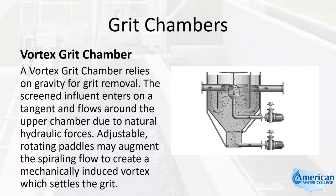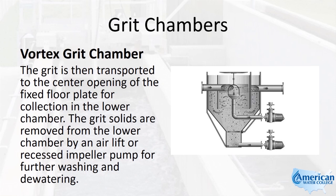A vortex grit chamber relies on gravity for grit removal. The screened influent enters on a tangent and flows around the upper chamber due to natural hydraulic forces. Adjustable rotating paddles may augment the spiraling flow to create a mechanically induced vortex which settles the grit. The grit is then transported to the center opening of the fixed floor plate for collection in the lower chamber, where it is removed by an airlift or recessed impeller pump for further washing and dewatering.